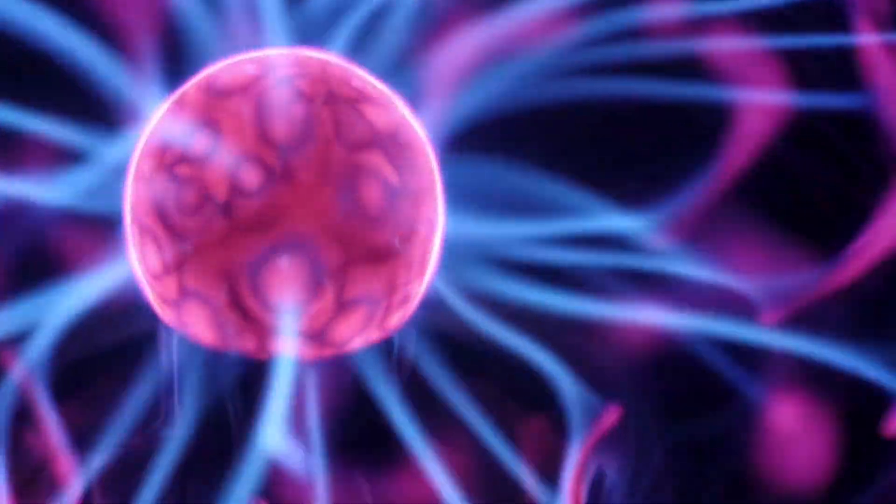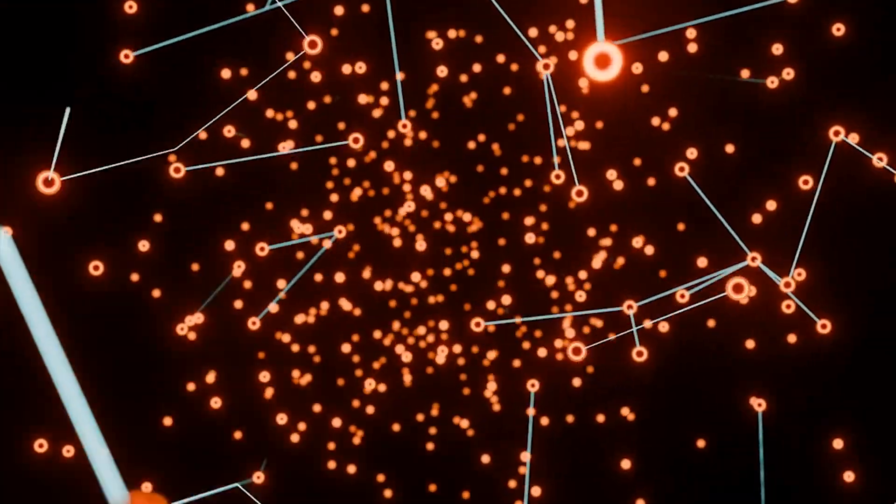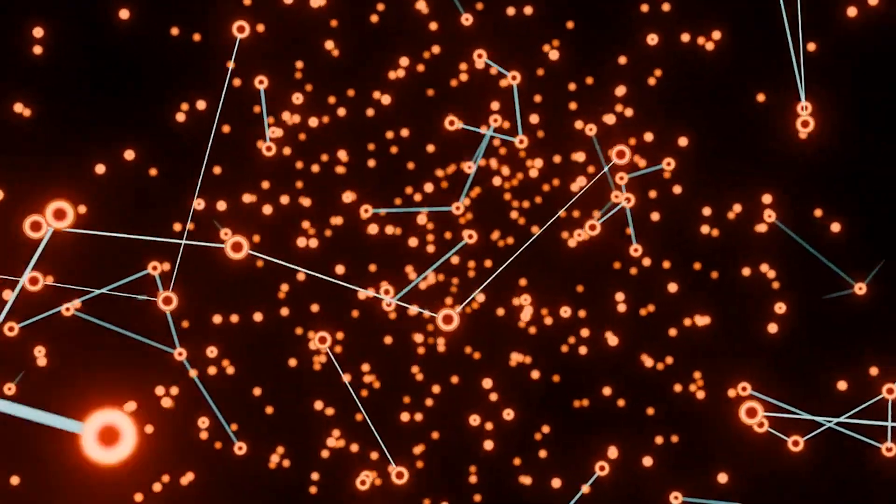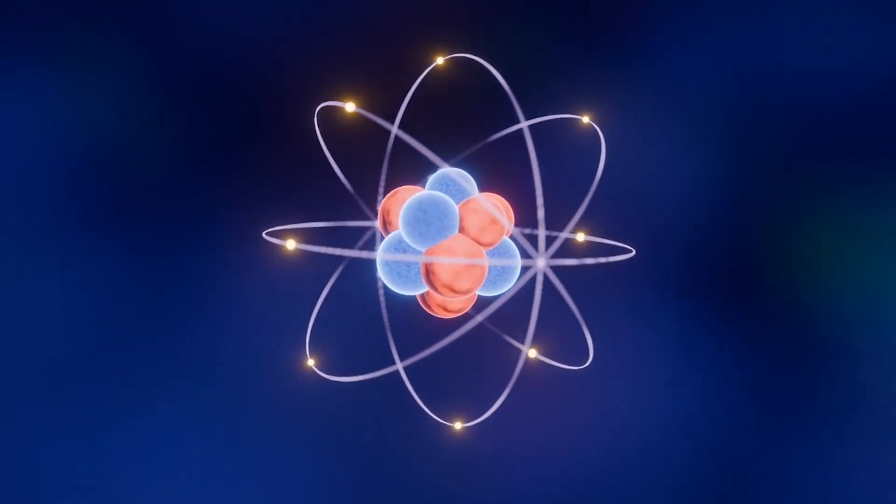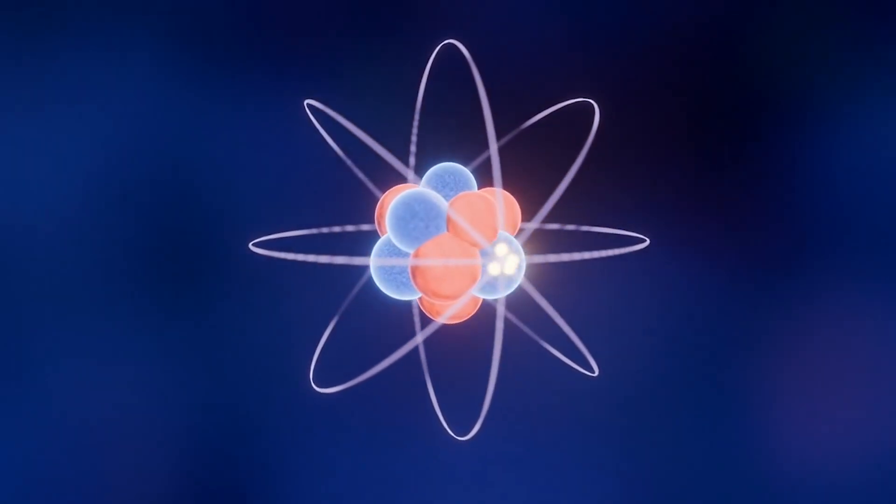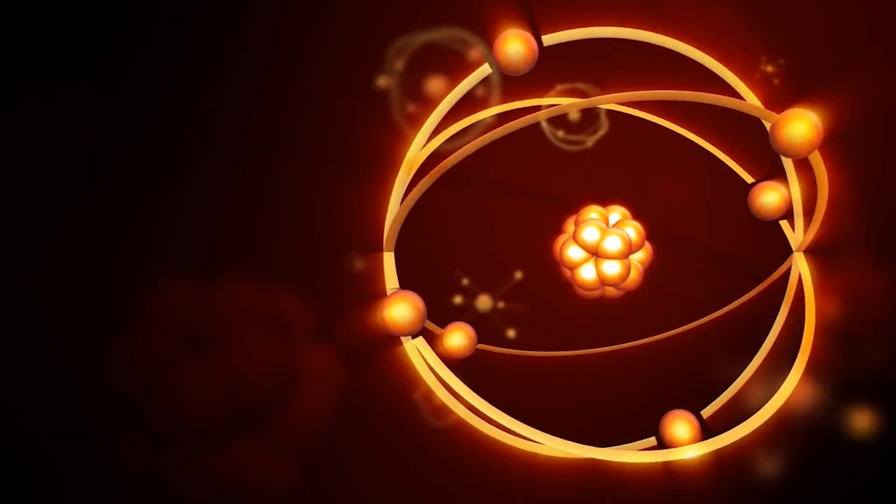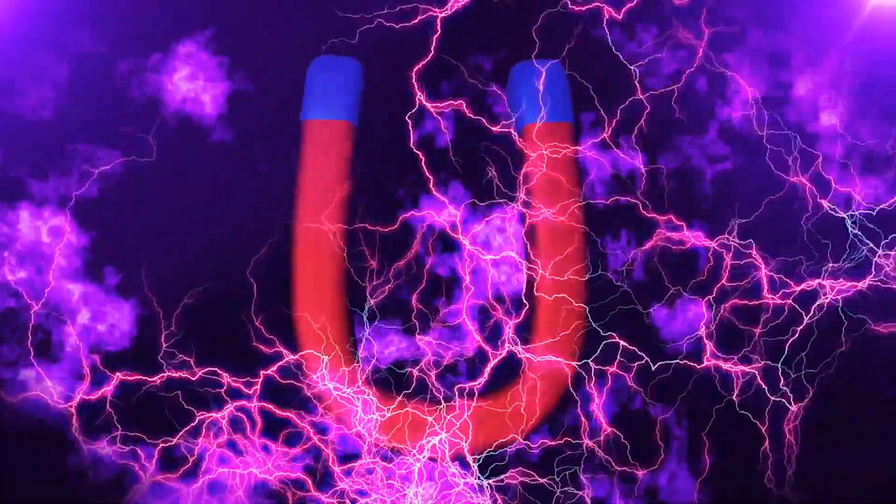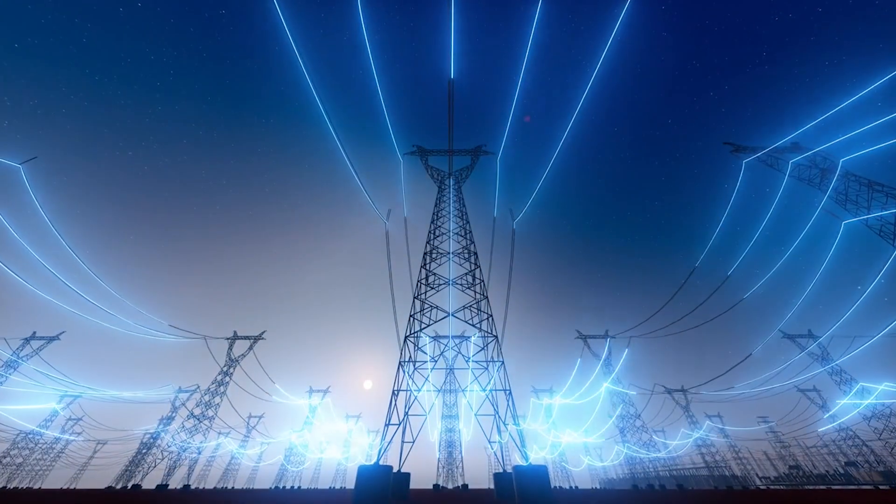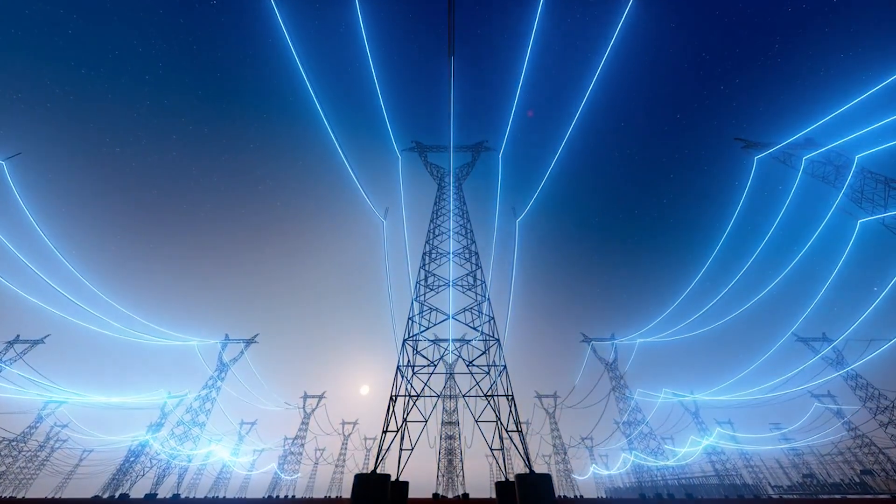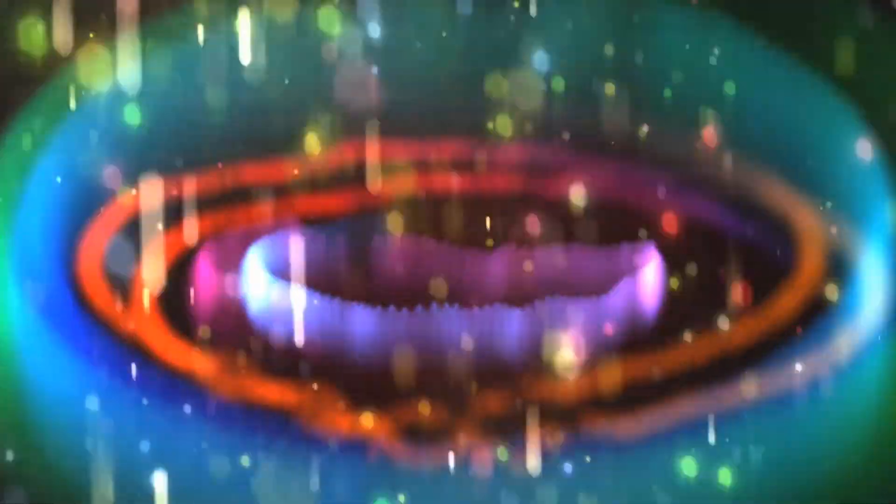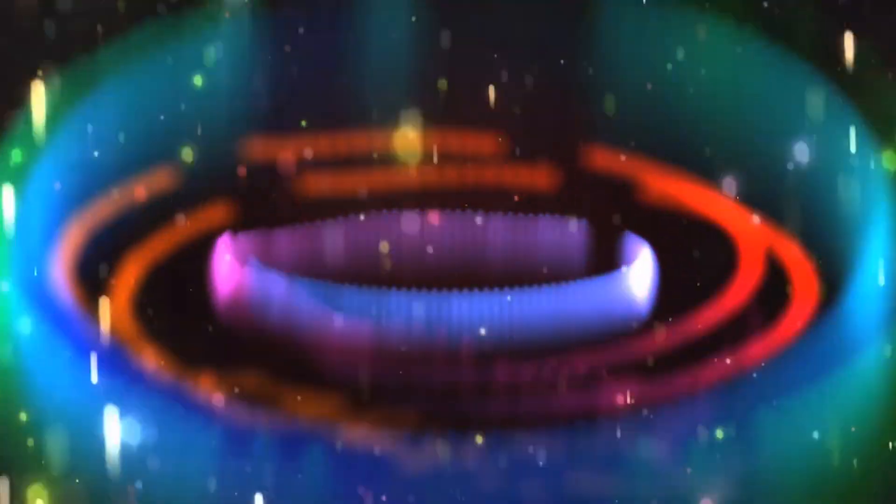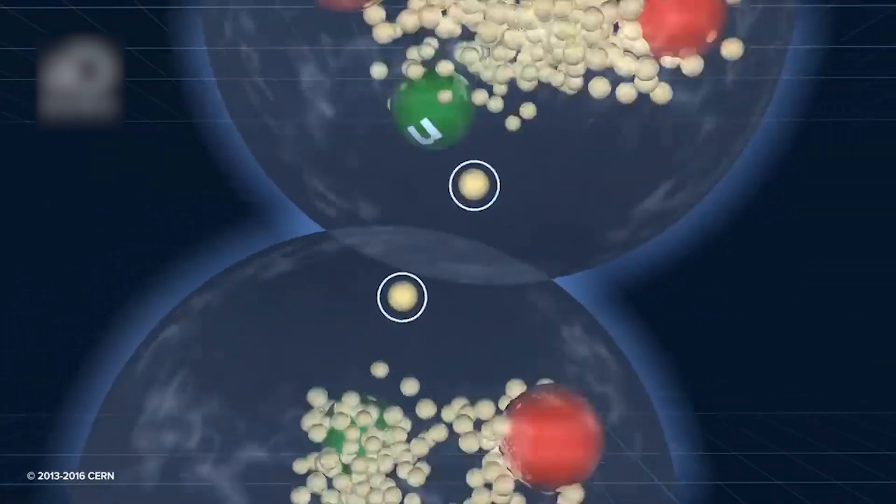The underlying process begins with ionization, the excitation of electrons. Inside each atom, electrons orbit the nucleus in defined energy levels, sometimes called orbitals. When the electromagnetic field from the Tesla coil passes through, it transfers energy to those electrons. The electrons absorb this energy and jump to higher orbitals, entering an excited state. But this is a temporary condition.